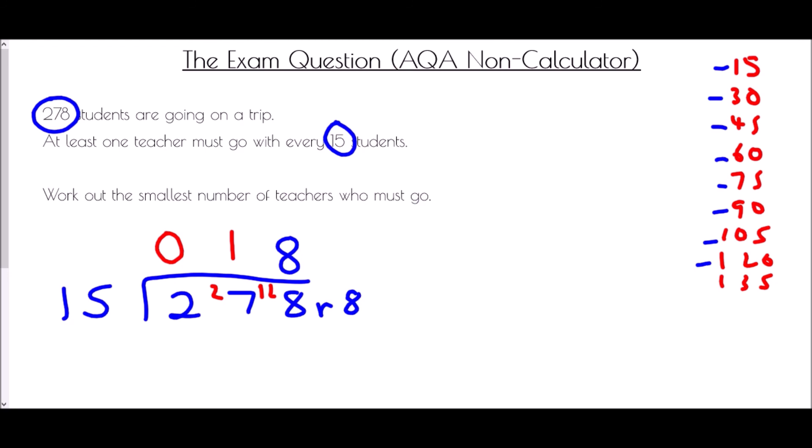Well if there is at least one teacher with every 15 students, we definitely need 18. But because there is an extra bit left over, we're going to also need an extra teacher. And so in this case, because there is a remainder, it means we need one more teacher. And so we would need 19 teachers to cover the whole group.